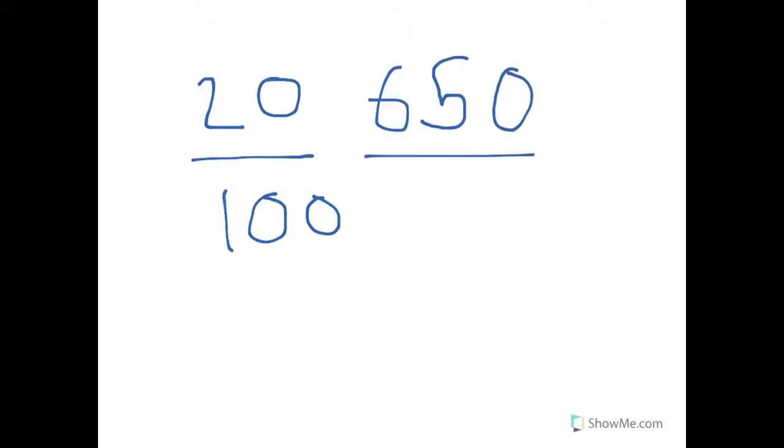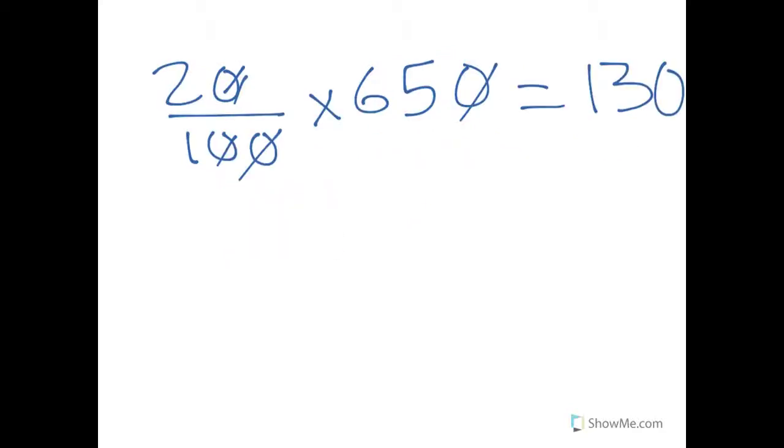First we will find 20% of $650. So 20 over 100 times $650. We can do cross multiplication, so 20 times 65. After simplifying, we will get 130. Then we will subtract $650 from $130, so that equals $520.